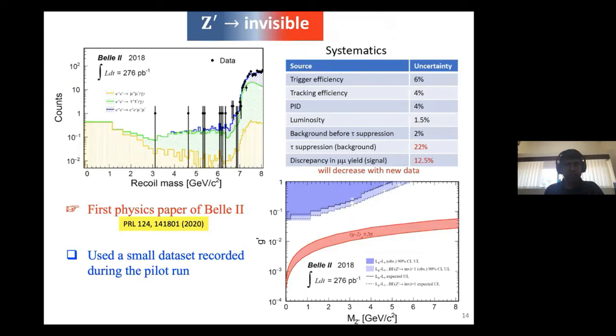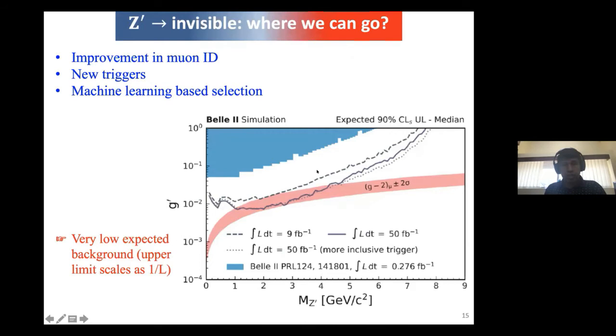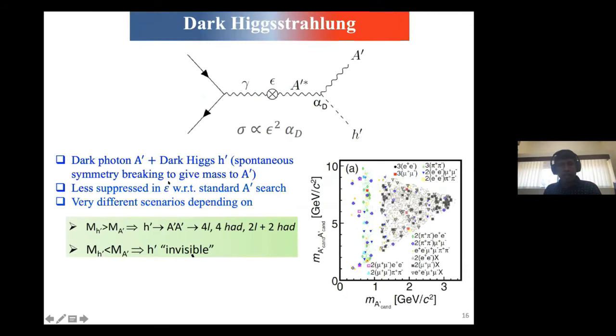Here is the result from Z prime to invisible. You see in the recoil mass of the photon, the data points are consistent with the background standard model prediction. This was the first physics paper from Belle 2, just using a small data set recorded during the pilot run. This is the limit you see. With the full data, we can go up to here. With 50 inverse attobarn of data, you see this dotted line. We're expecting improvement with muon ID, new trigger, and machine learning-based selection.